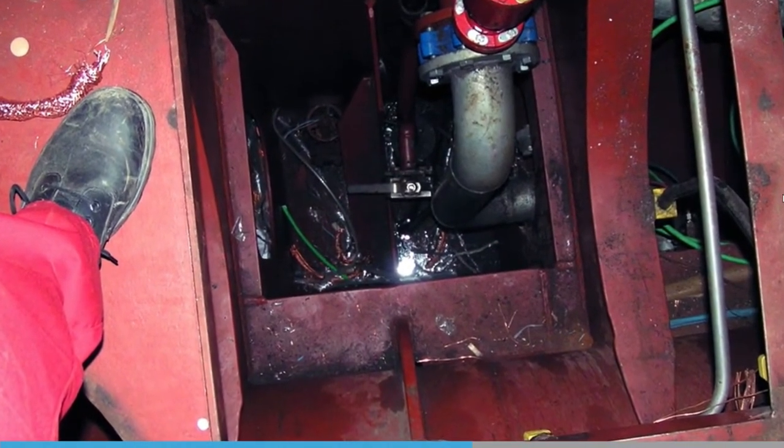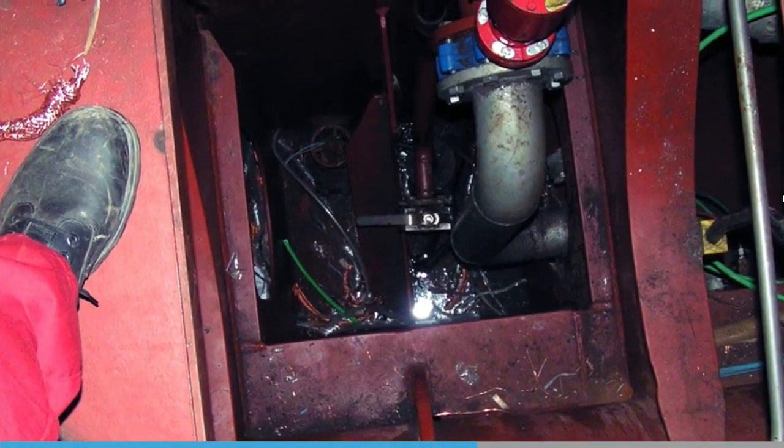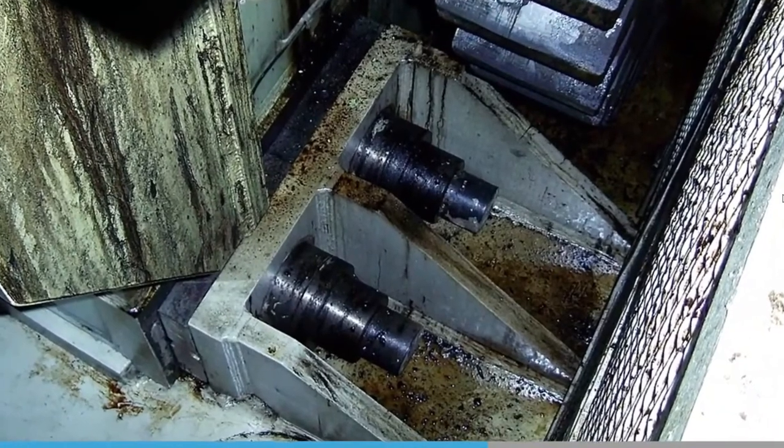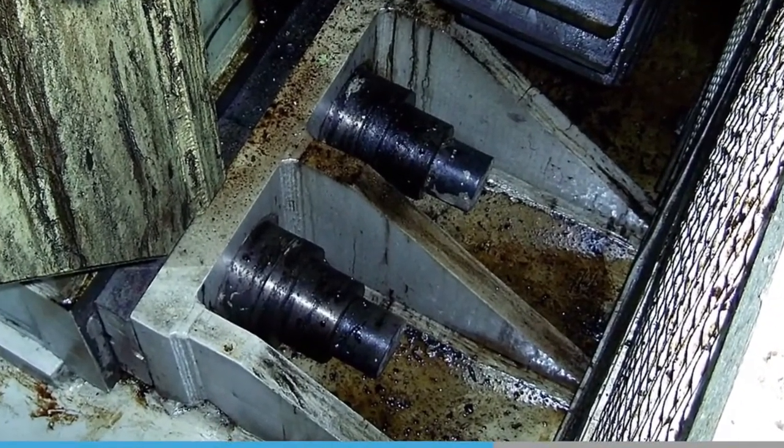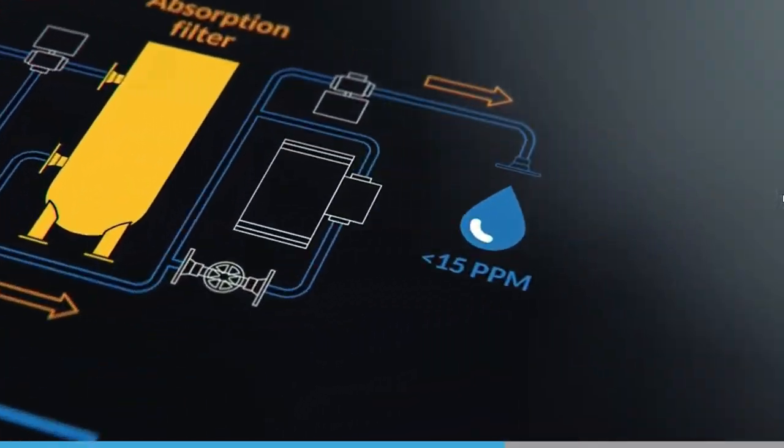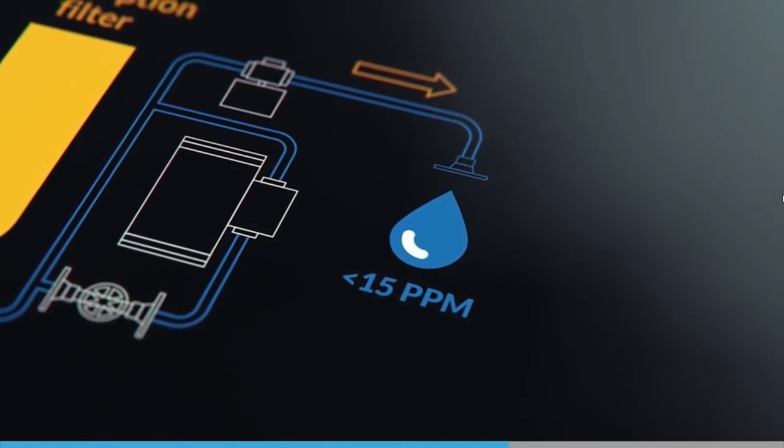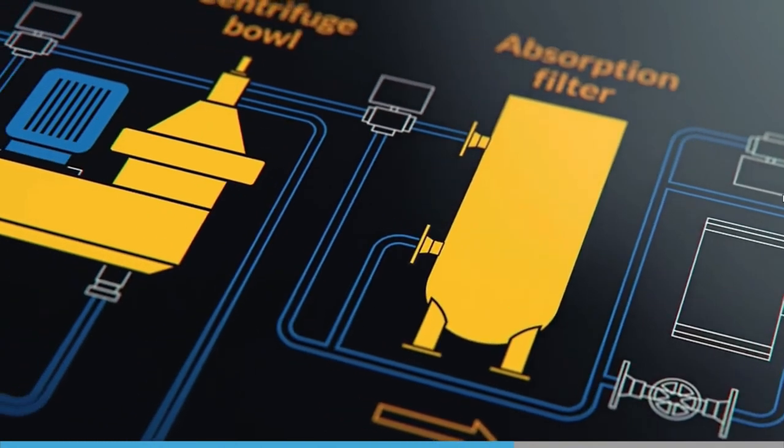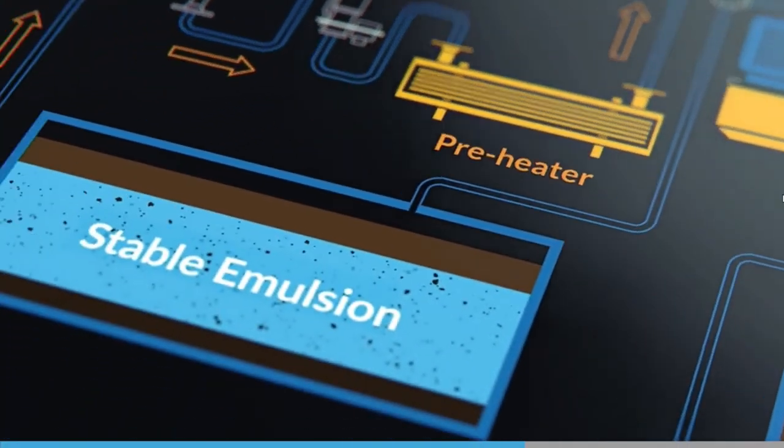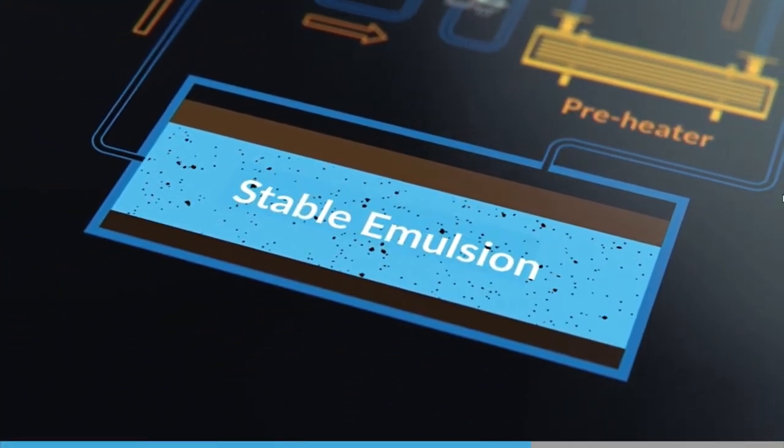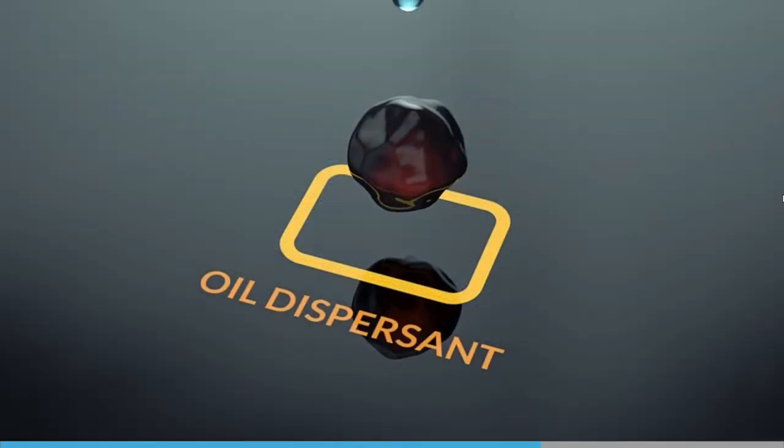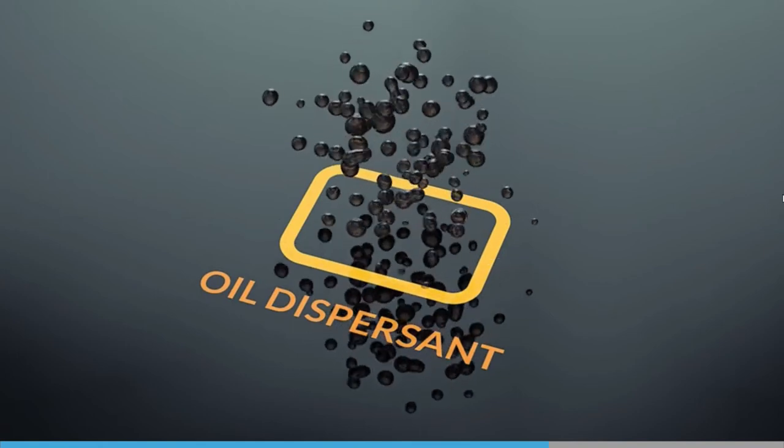As you know, bilge water is water that gathers in the engine room bilges. Unfortunately, on its way there it can become contaminated with small solid particles, detergents and soaps, and dispersants. All of these increase the difficulty of having totally clean water at the outlet from the bilge water separator. The formation of stable emulsions in bilge water creates a particularly difficult situation for the bilge water separator to deal with, since it is harder to separate the water from the small droplets of oil in a stable emulsion.